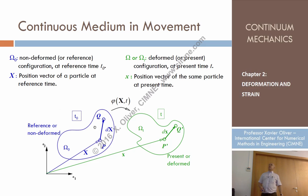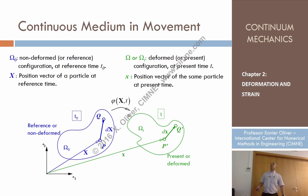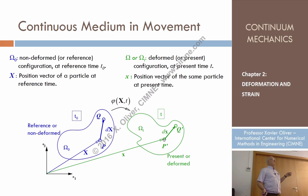Let's consider a body in the reference configuration at reference time t0, which could be 0 or some other time. We have equations of motion that provide, for every particle P characterized by material coordinates capital X, its spatial position at the current time — the same particle that occupies position P at time t0 now occupies position P prime.